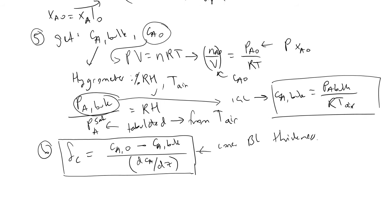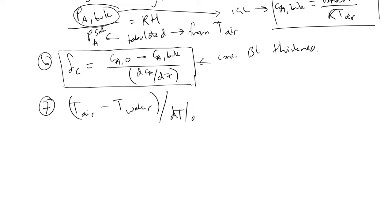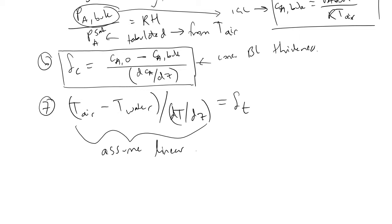Step seven: to find the thermal boundary layer thickness, we take the temperature of the air minus the temperature of the water, and divide this quantity by dT/dz — the temperature profile in the z-direction found previously. This gives us the average thermal boundary layer thickness. It is important to note that we can assume a linear relationship because we are operating at steady state.